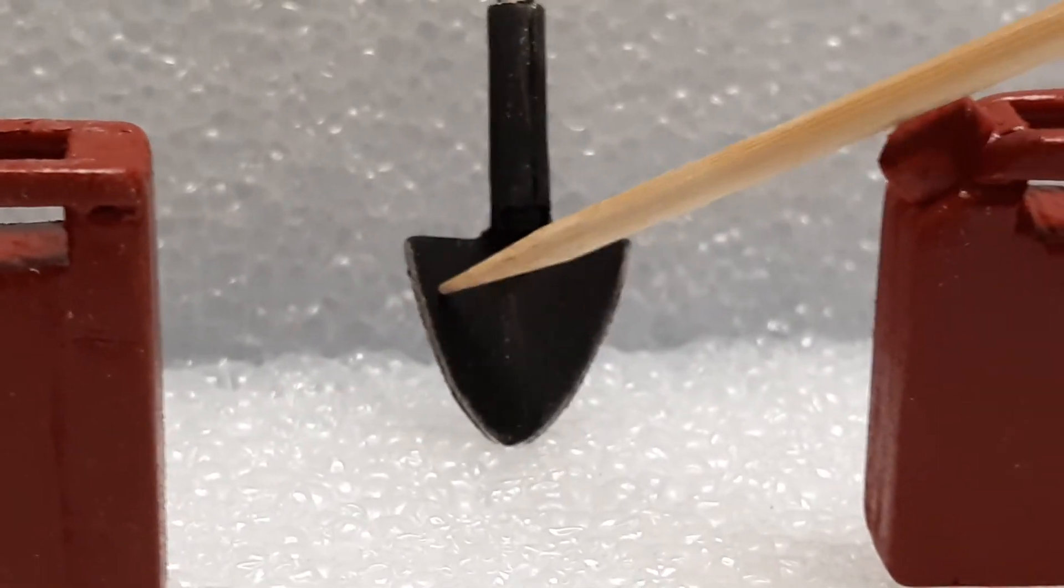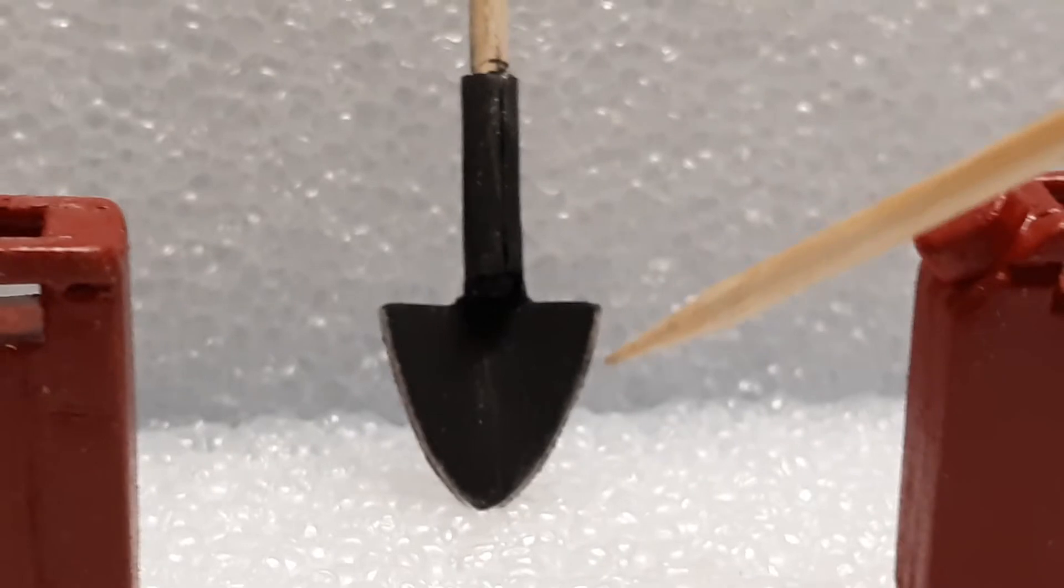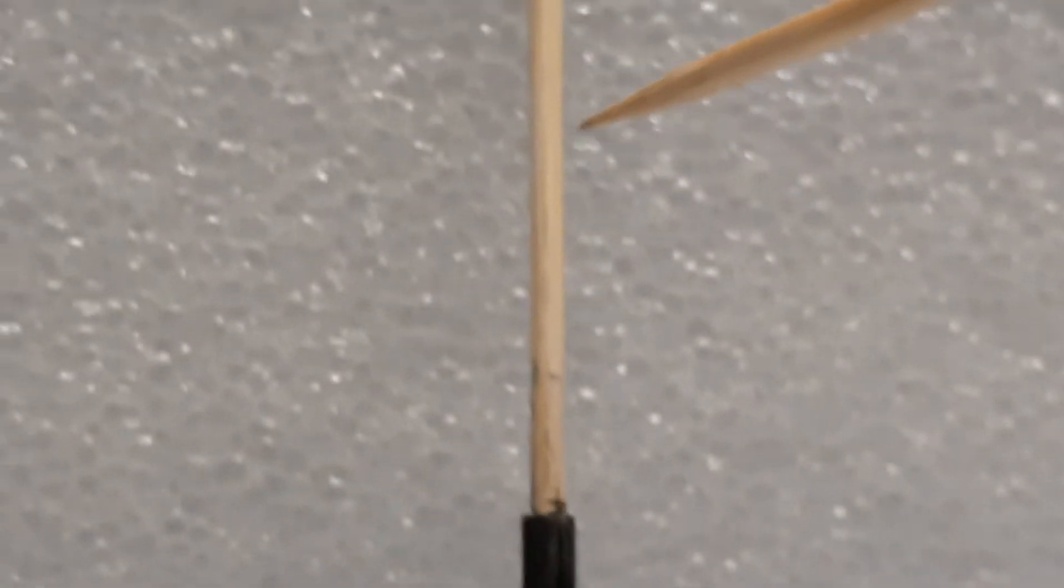But this is actually a piece of real aluminum that's been notched on that side, notched on that side, and then wrapped around a bamboo skewer right here to create a shovel.